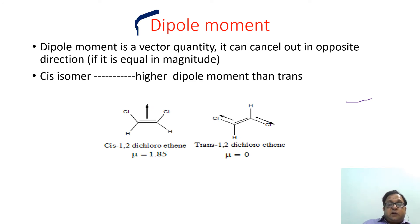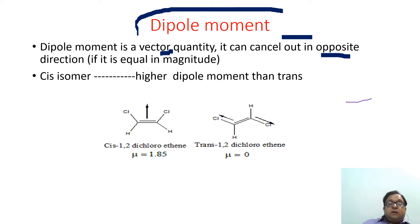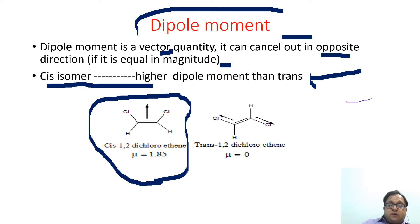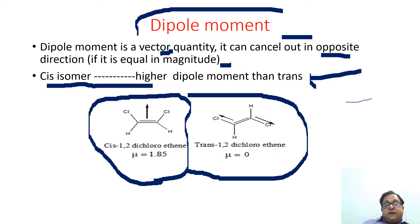The very first method to be discussed is dipole moment. As we know, dipole moment is a vector quantity. It can cancel out in the opposite direction if the vectors are of equivalent magnitude. Therefore, cis isomers have a higher dipole moment compared to trans isomers. Let us look at how this arises — there are two structures in front of us.